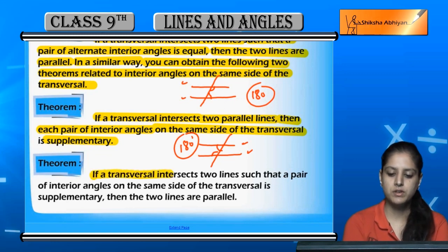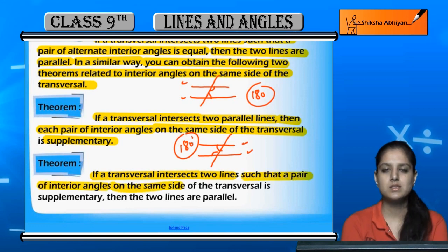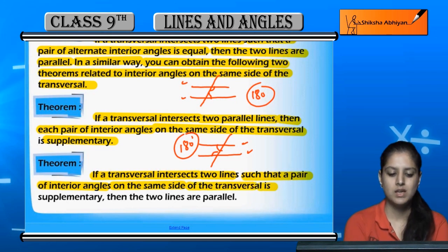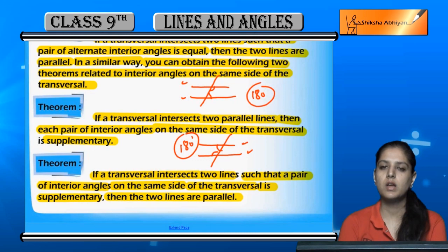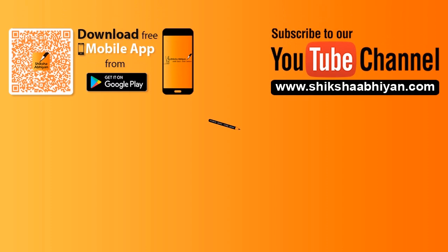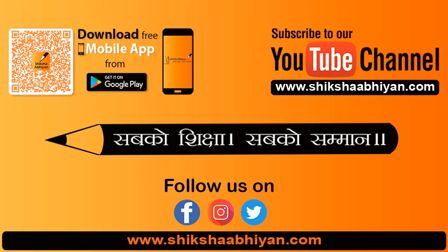If a transversal intersects two lines such that a pair of interior angles on the same side of the transversal is supplementary, then the two lines are parallel. The converse is also true - if two random lines are intersected by a transversal and the interior angles on the same side sum to 180 degrees, then those two lines are parallel. These are important theorems based on parallel lines and transversals which will be very useful to you in future proofs.